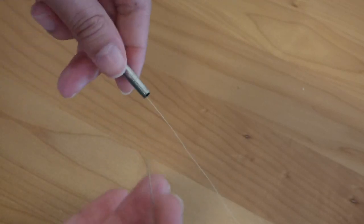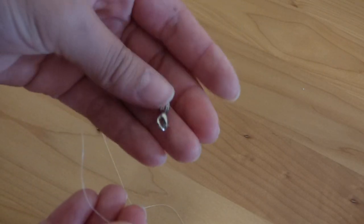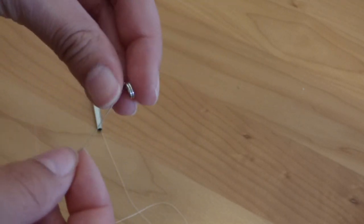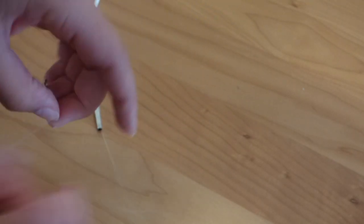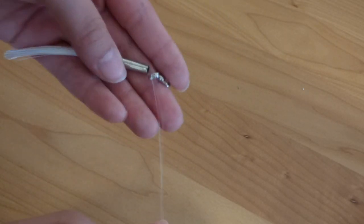Then you're going to take your beading needle and thread it through your split ring. And I've already attached my lobster clasp to my split ring, but you can do that a step after. So you're going to thread it through the split ring.